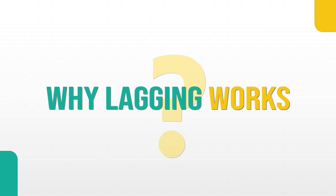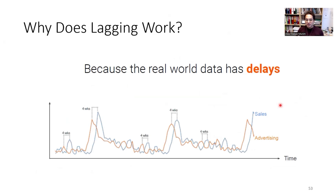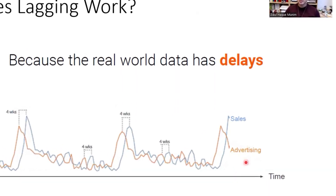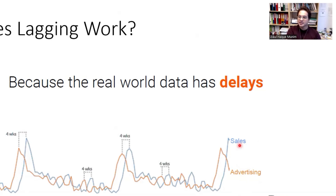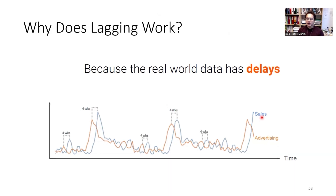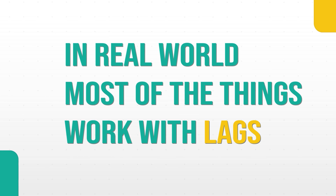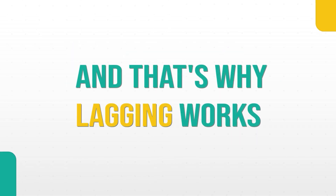Why does lagging work? Because in the real world, data has lags. For example, in advertising and sales, you spend money on advertising and the effect comes after some time. As a professor of shipping and logistics, we research shipping markets where bad news takes time to be reflected in the market. If the market is doing well and you order a ship, the supply and delivery comes with lags. In the real world, most things work with lags — that's why lagging works in forecasting.